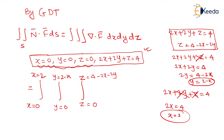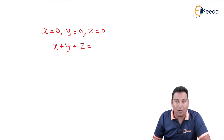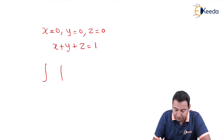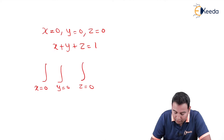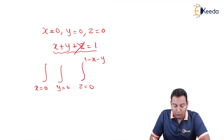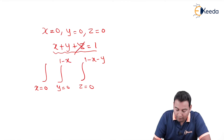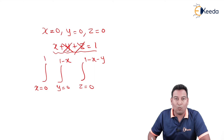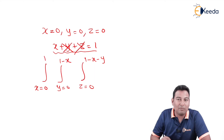Let me give one more illustrative example of this technique. Suppose instead we had x=0, y=0, z=0, and x+y+z=1. The limits would be: z from 0 to 1−x−y; forget z, y from 0 to 1−x; forget y, x from 0 to 1. This technique makes problems straightforward.